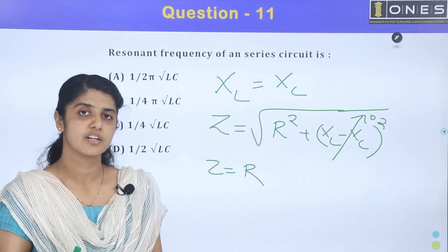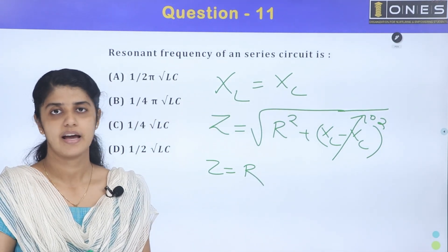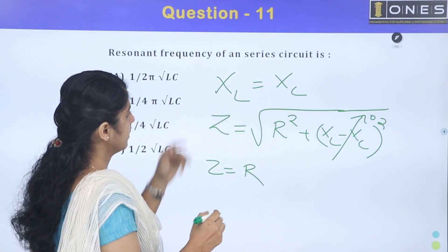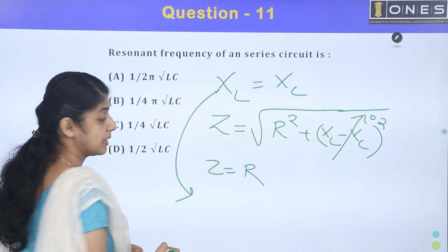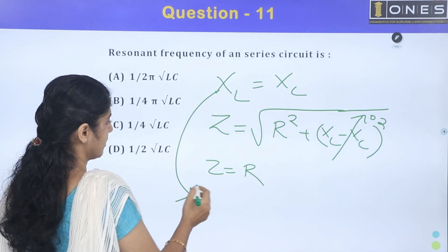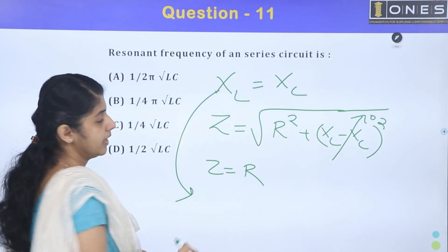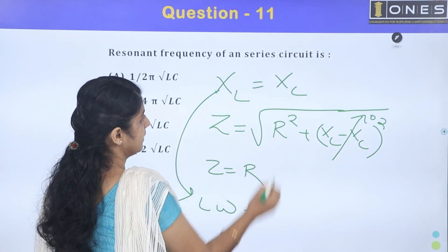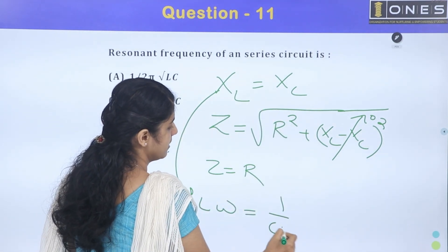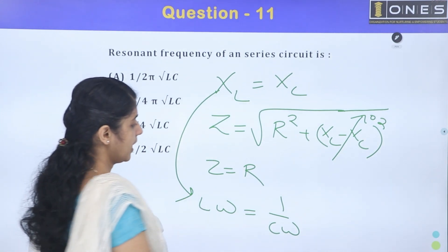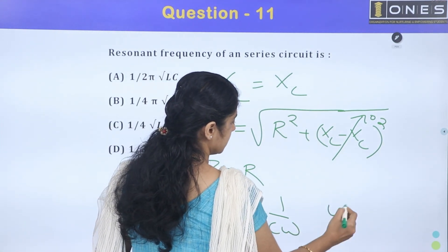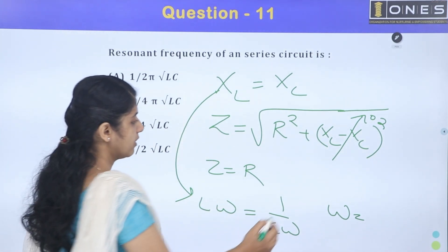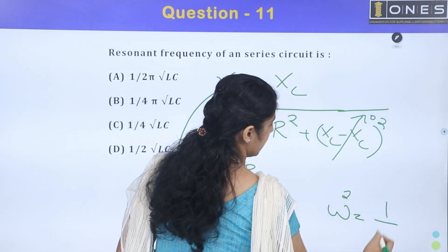At resonance, the circuit is purely resistive and active. Setting XL = XC: inductive reactance XL = Lω, and XC = 1/(Cω). So Lω = 1/(Cω), giving ω² = 1/(LC).